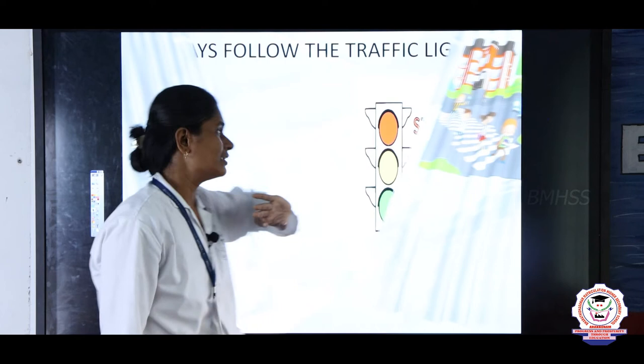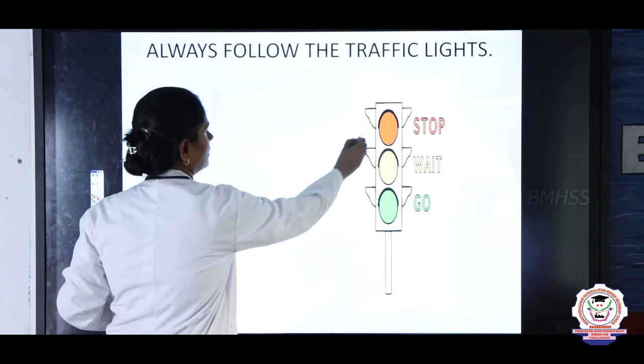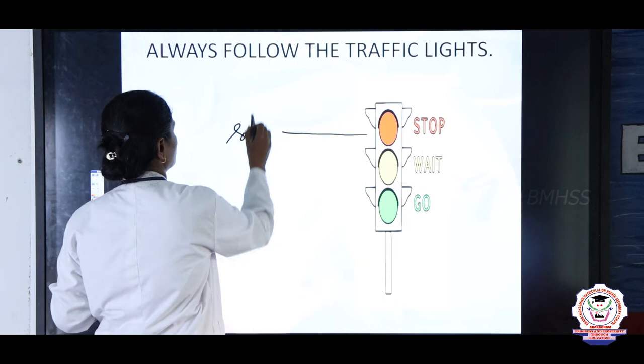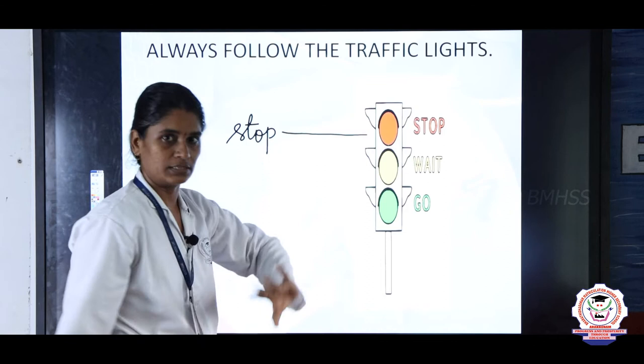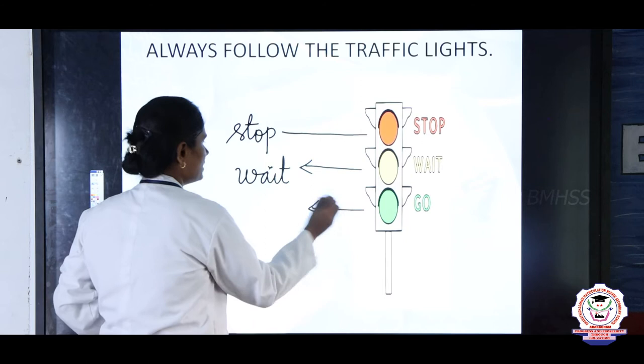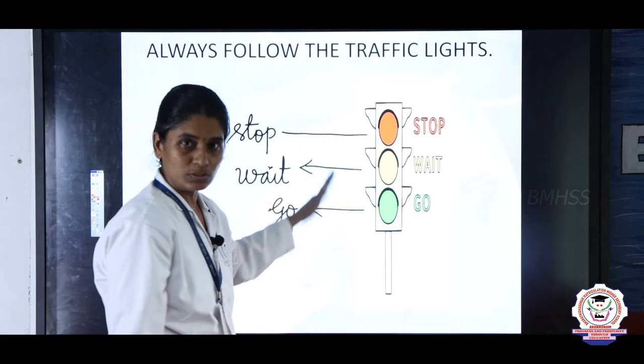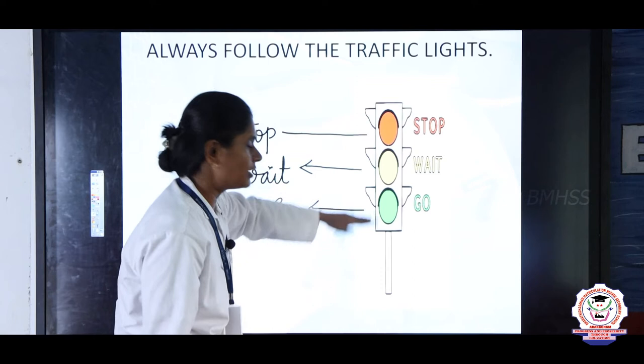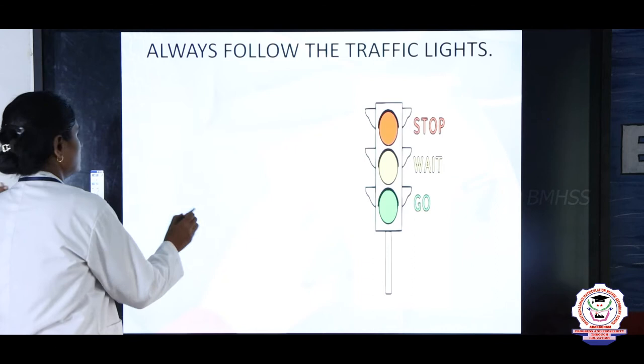Next, you must follow the traffic signal. As mentioned, red means stop — if a red light shows, you must stop your vehicle. If there is a yellow light, you have to wait until you get the green light. Once you get the green light, you can move or go. By obeying the traffic signals, we can avoid accidents.